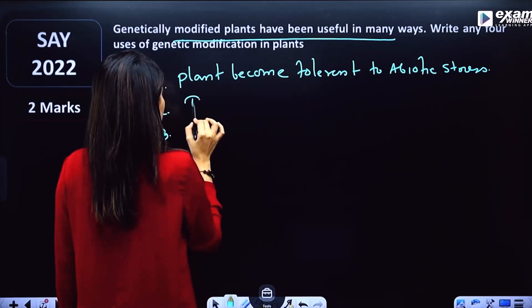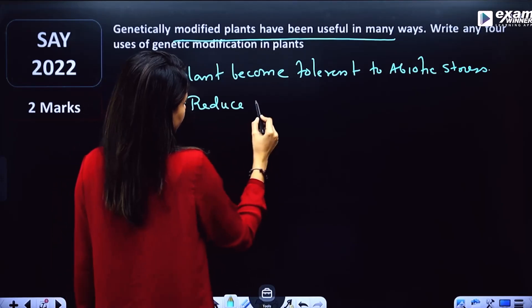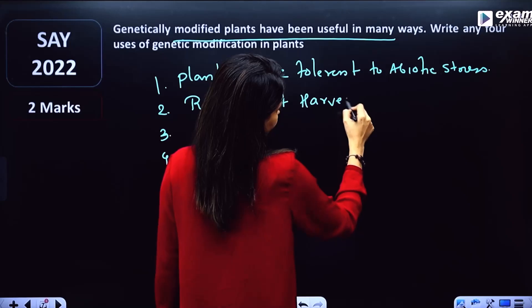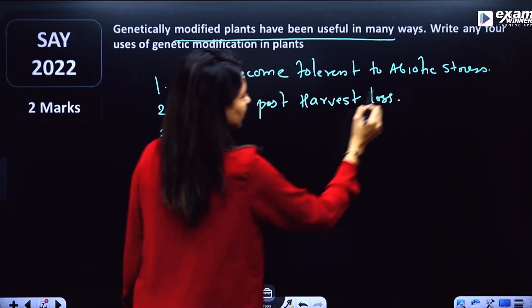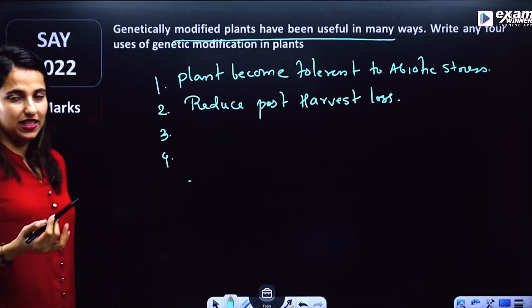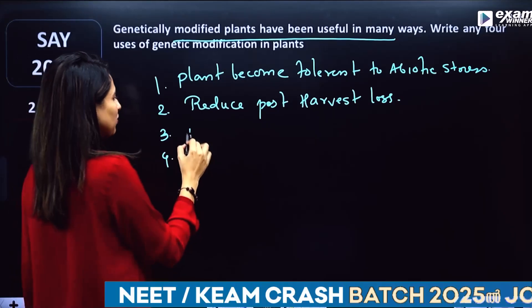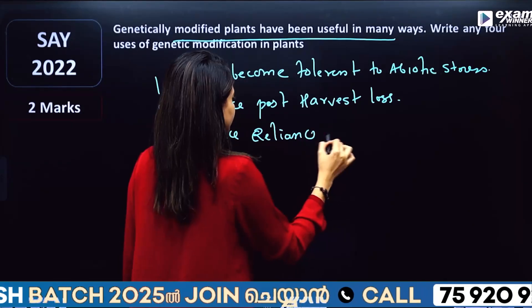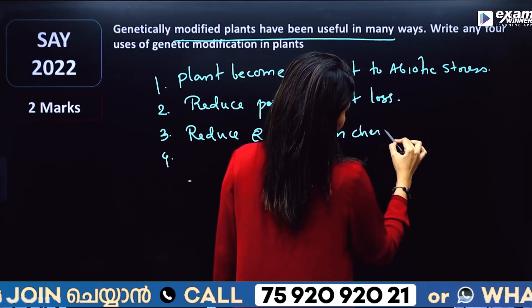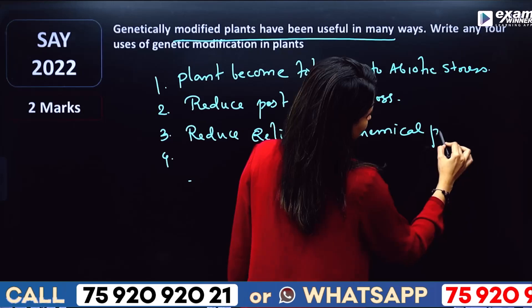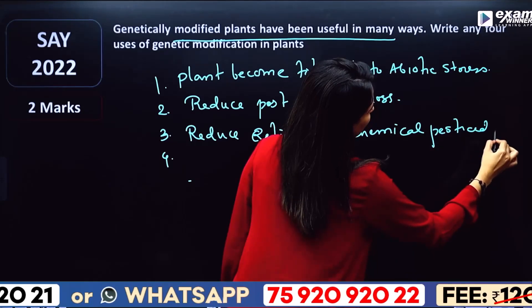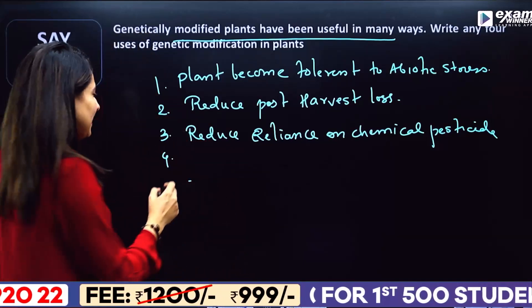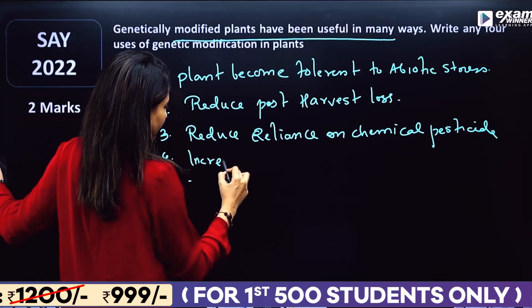Second, we can reduce post-harvest loss. Third, we can reduce reliance on chemical pesticides. Fourth, we can increase mineral usage efficiency.